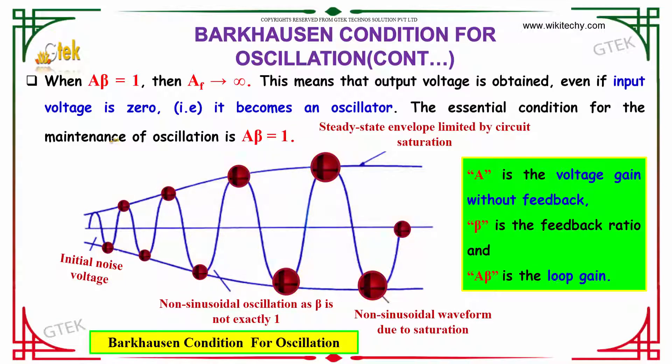The essential condition for the maintenance of oscillation is A beta equals 1.